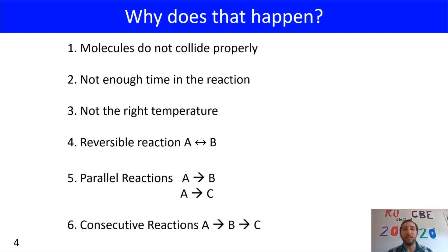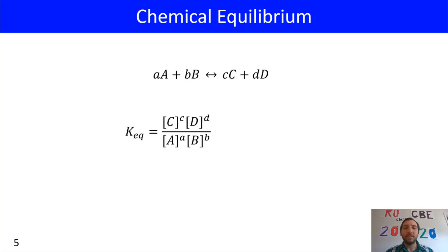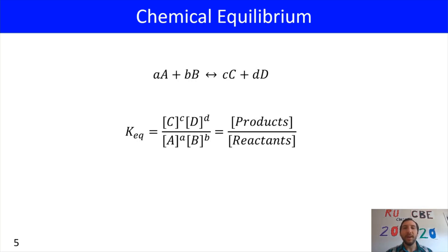Now we'll talk about chemical equilibrium. We have reactants A and B forming products C and D, where the capital letters are the species and the lowercase letters are the stoichiometric coefficients. The equilibrium constant expression is products over reactants: concentration of C raised to coefficient c, times concentration of D raised to coefficient d, divided by concentration of A raised to coefficient a, times concentration of B raised to coefficient b.